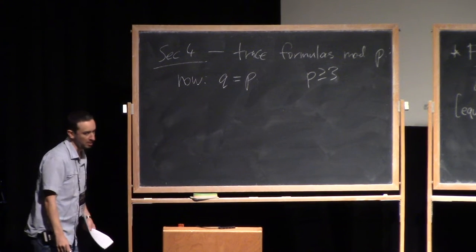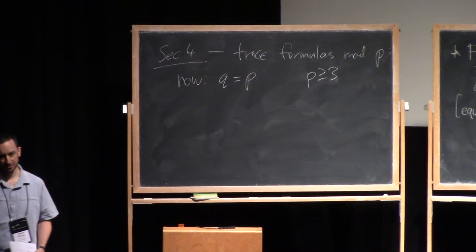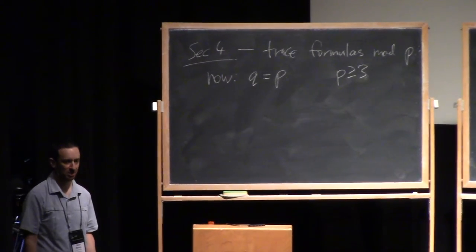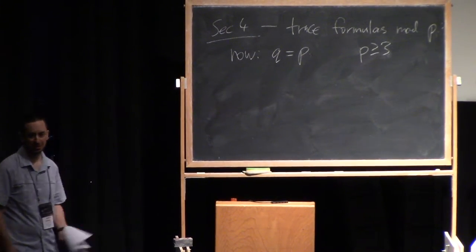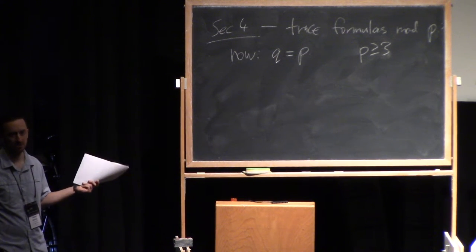And I should really point out that everything I'm going to do can be done over F_Q. There's no essential obstruction. We know how to do that. For instance, you look at my paper from 2015. That's everything is over F_Q. So you can see how it works there.